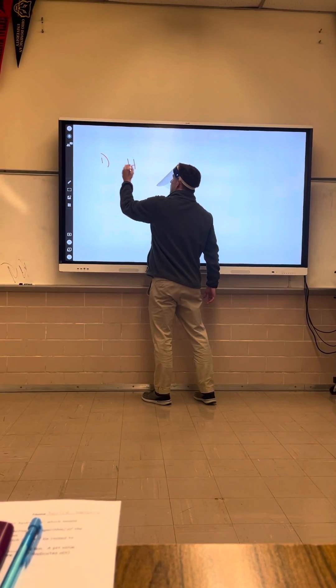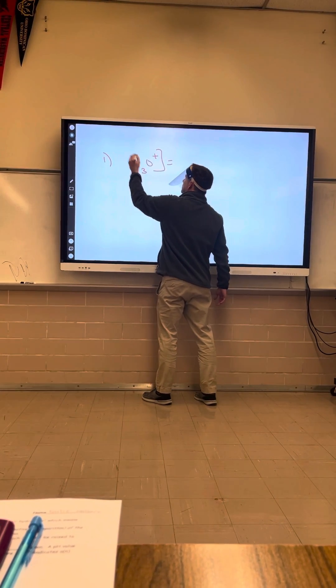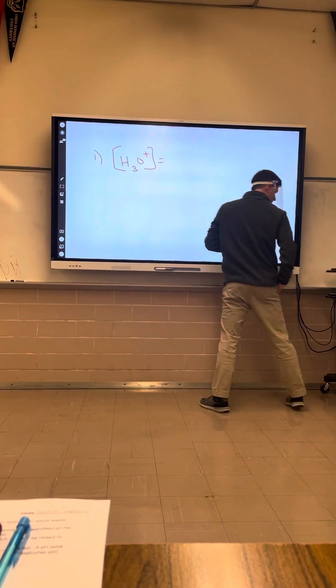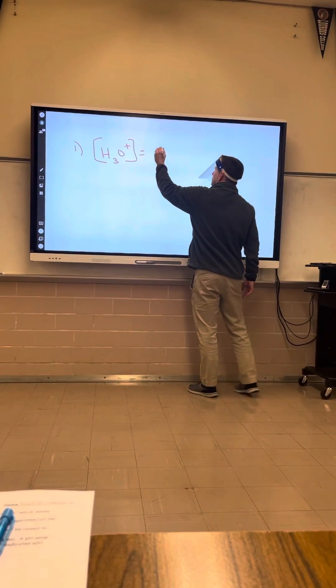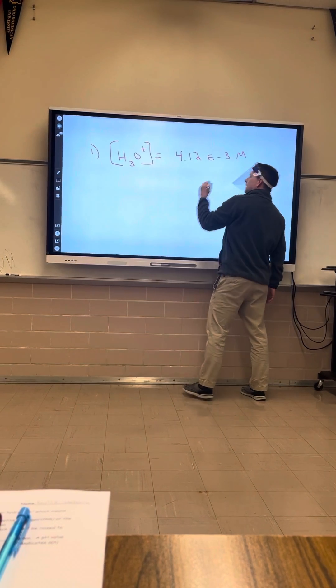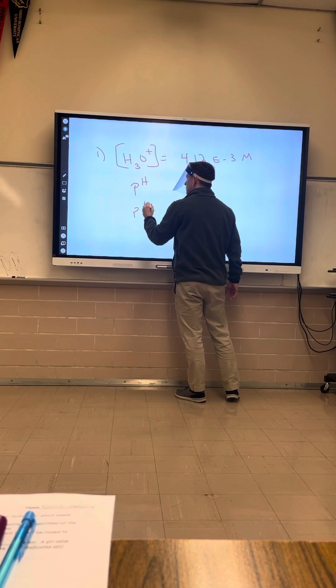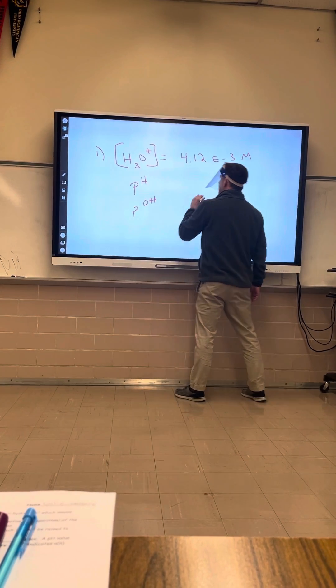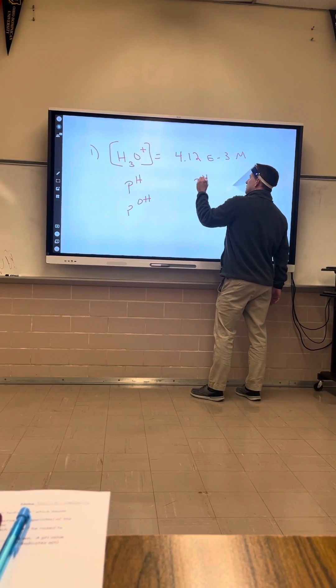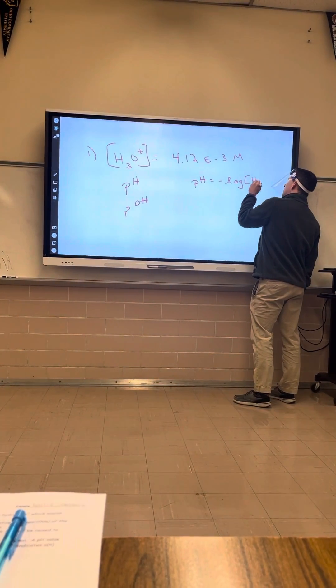Say the H3O+ concentration equals 4.12 E to the minus 3. Let's find the pH and then the POH. pH equals negative log of H3O+.